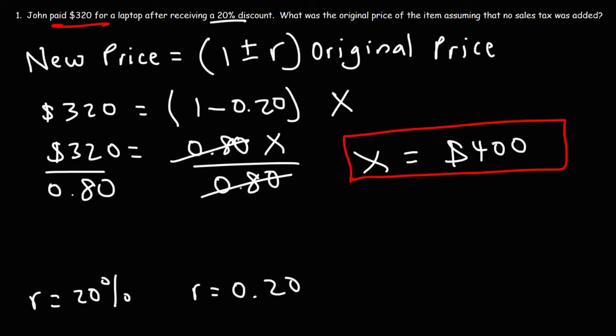After you receive a 20% discount, it went down to 320. And you could check your answer. You could find out, hey, what is 20% of 400?